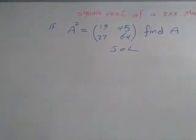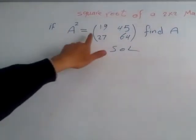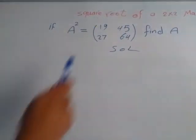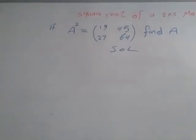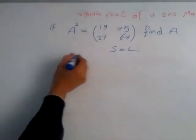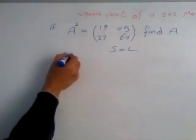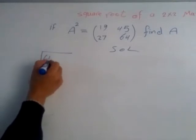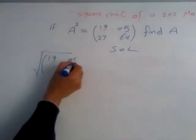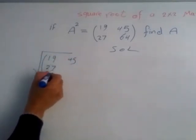Assalamualaikum. Today we're going to talk about a new topic: square root of a 2x2 matrix. As you see in the whiteboard, if A squared is this matrix (19 45; 27 64), find A. So the question is find the square root of the matrix (19 45; 27 64).